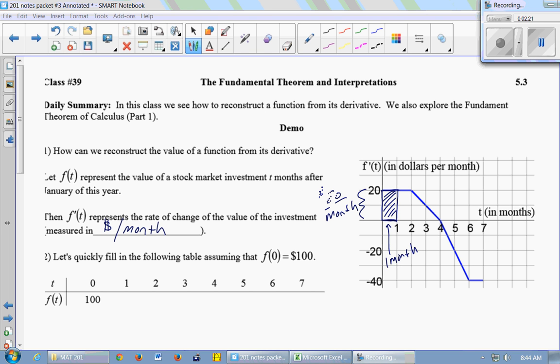That is the change in value of your investment. So your investment changed by a value of $20. So what is my value at one month? $120.